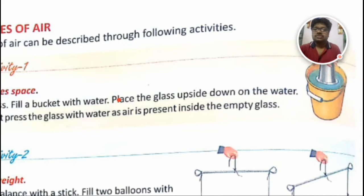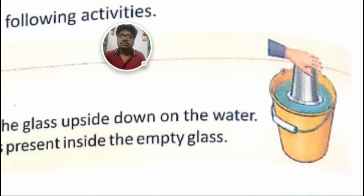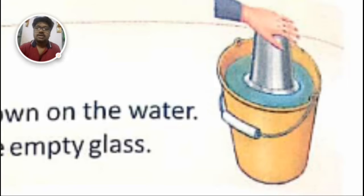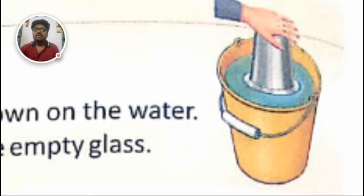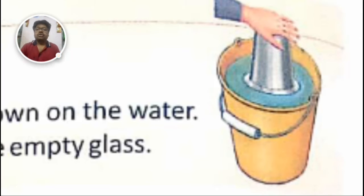First activity: air occupies space. Observe the image — there is a bucket tub, and a person is holding a glass in an upside-down position, trying to immerse it into the tub which already has some water. The level of water in the tub increases, so we can understand that the glass contains air and that air is occupying some space in the water.